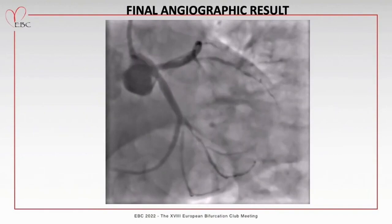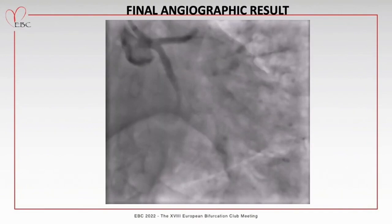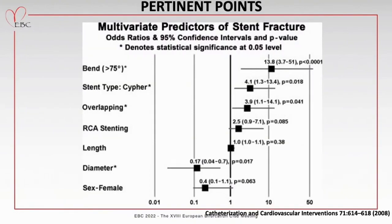The final angiographic result showed no residual lesion and good flow in both LAD and circumflex. Multiple predictors of stent fracture have been described, occurring between 60 days and four years after implant. Placing stents in angulated branches can alter vessel geometry; torsional moments can lead to metal fatigue and fracture. First-generation drug-eluting stents, especially Cypher stents, are more commonly associated with this complication, but second-generation DES can also fracture. In a series of everolimus-eluting stent implants, incidence of stent fracture was approximately 2.9%.